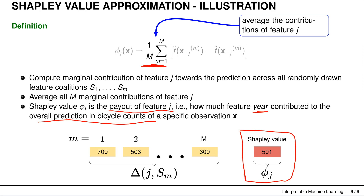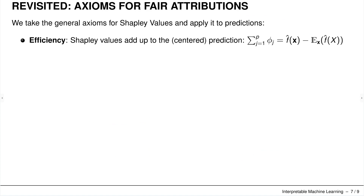Let's revisit the axioms for fair attribution. Efficiency means the Shapley values add up to the centered prediction — analogous to game theory where they add up to the total payout. In the value function v(S) we subtract the expectation, so if we sum up all Shapley values we get the prediction for that single observation x minus the expected value, i.e., the average prediction.